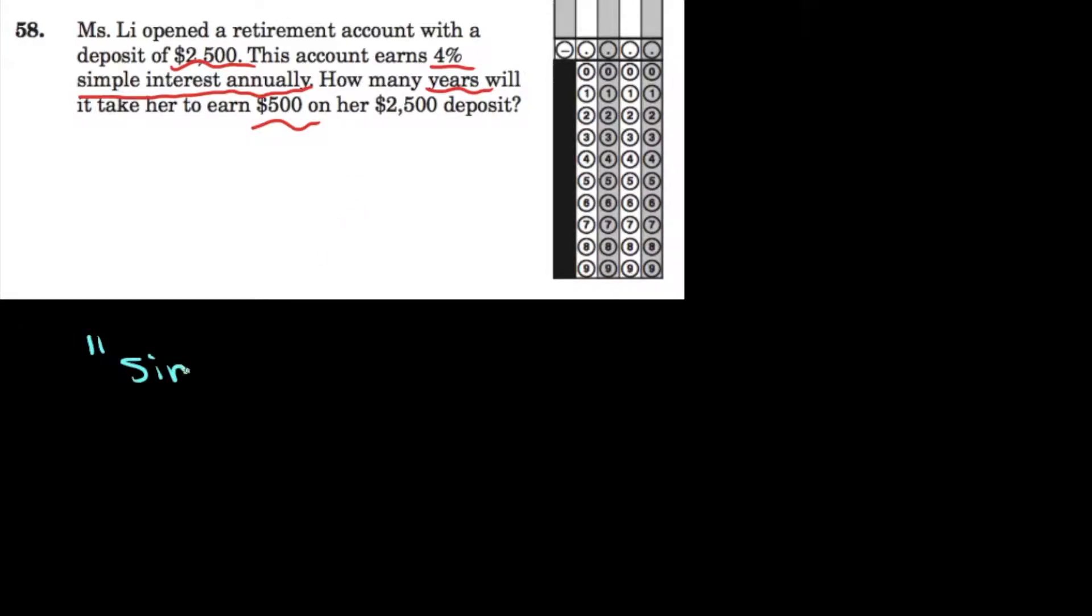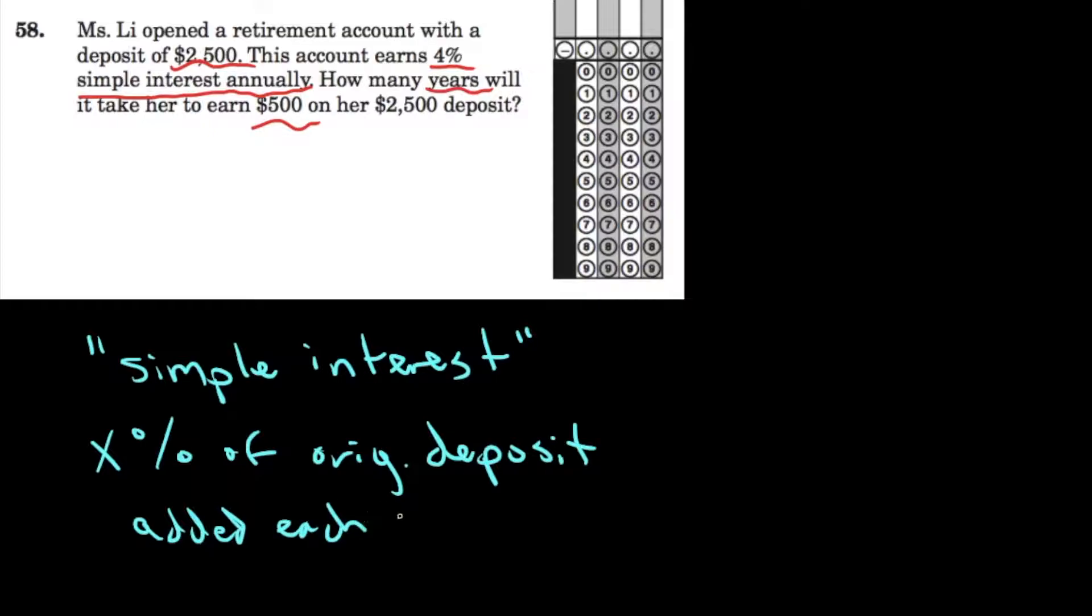Let's talk about this thing simple interest. If it's so simple, why don't they just tell us what it means? Well, here's what it means. Some percent, I'll call it X percent of the original deposit, is going to be added to Miss Lee's account at the end of each year. And I say each year because this says annually, and annually means once a year.